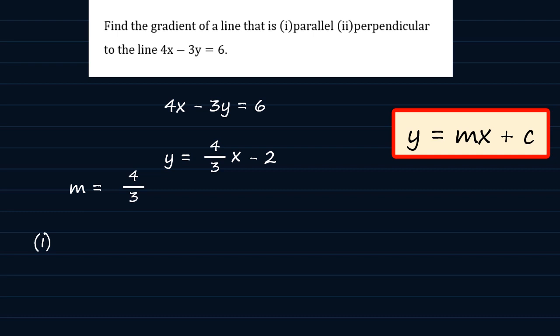So, to answer part 1, which requires us to find the gradient of the line that is parallel to this line, the answer should just come out as 4 over 3 because parallel lines have equal gradients. So, if this line has a gradient of 4 over 3, so should the line that is parallel to it.